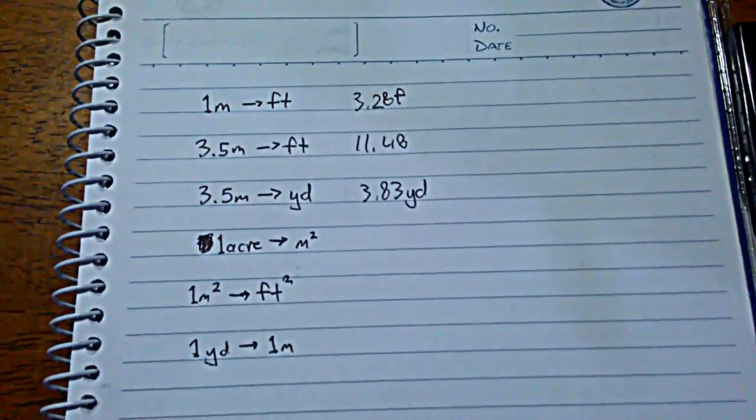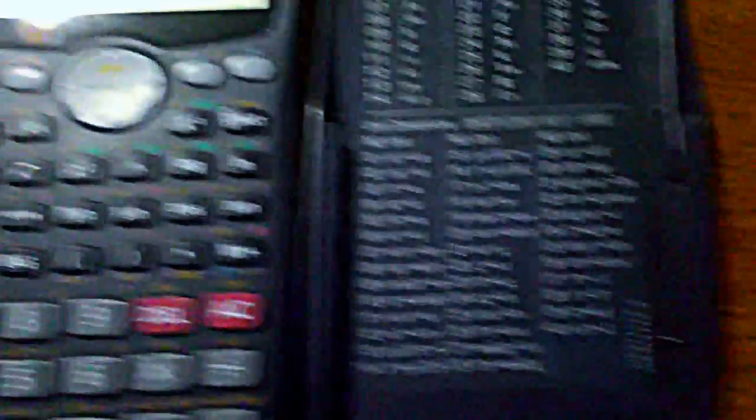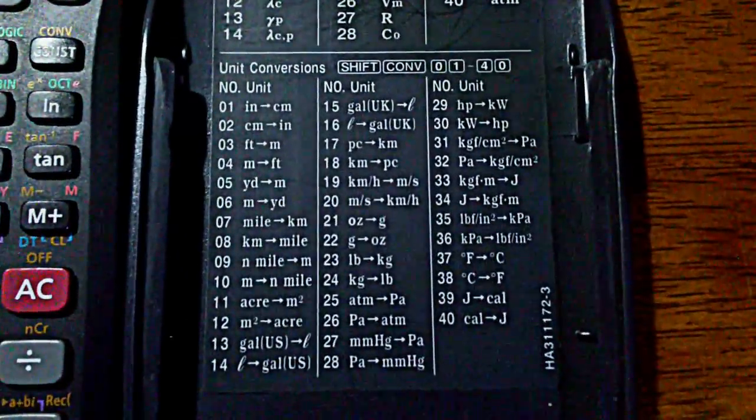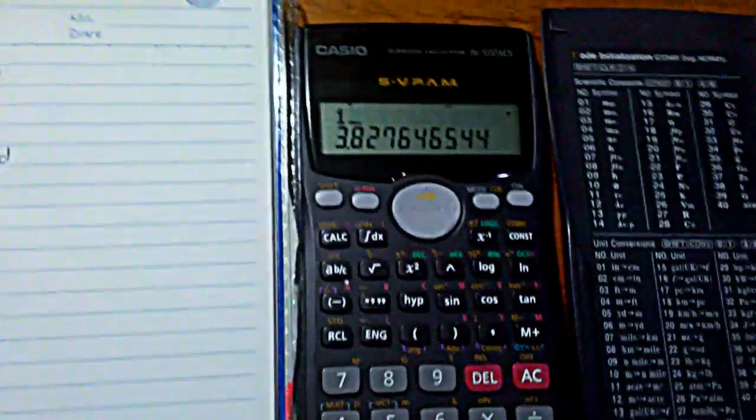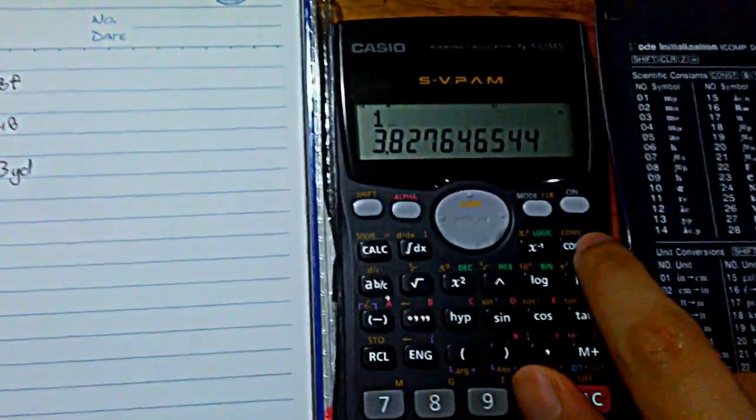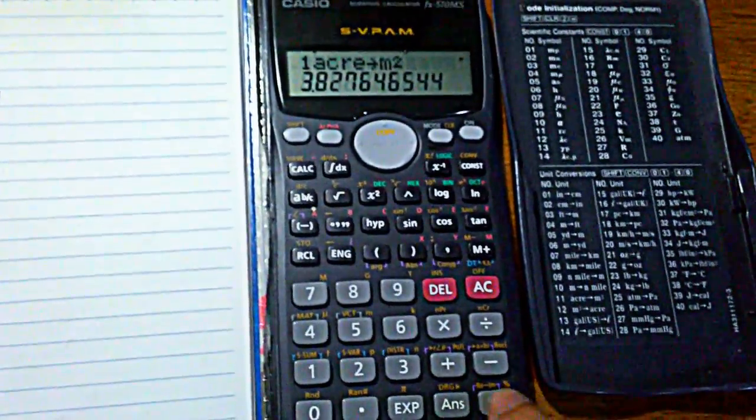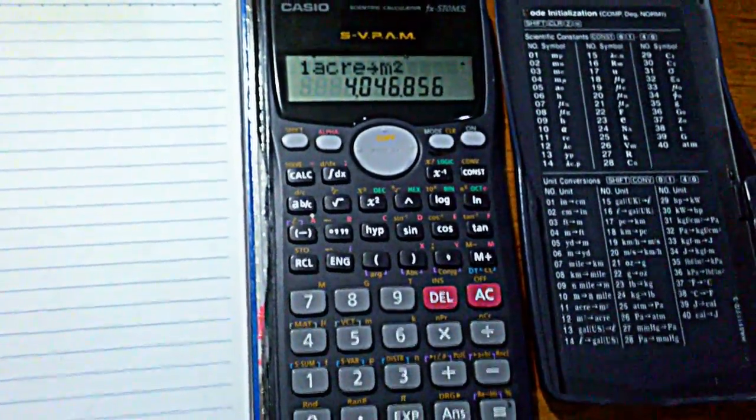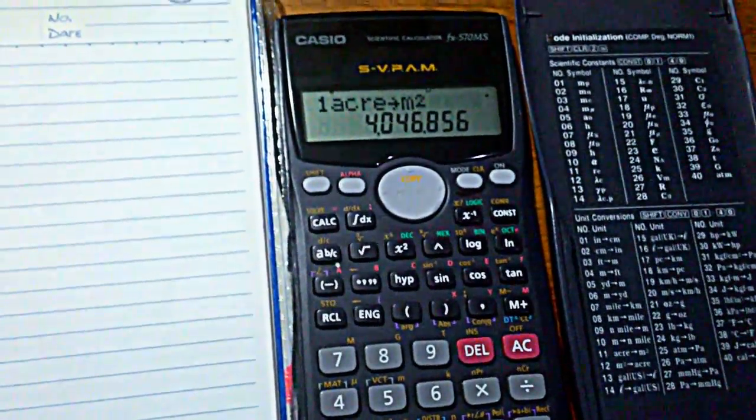All right. Now what if I'd like to convert one acre into square meters? Again, I checked the table in here. We see it's at number 11. So try that. One, and then convert. Input code 11. And then enter. So one acre is equal to 4.05 square meters.